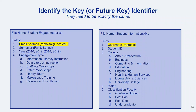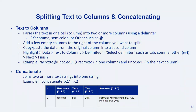Looking at the fields in the two datasets, the username in the student information file is actually the prefix of a student's email address. The easiest thing to do is to split this email address so that we're extracting the username. The simplest way to do that is using the text to columns feature, where Excel or Google Sheets parses the text in one column into two or more columns using a delimiter — something like a comma, semicolon, space, tab, or even the at sign like what we have in our email addresses.